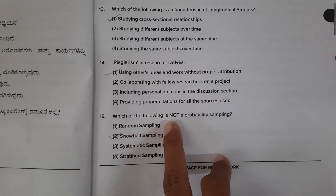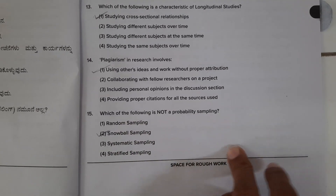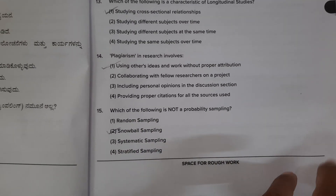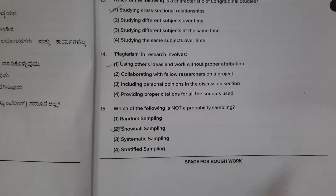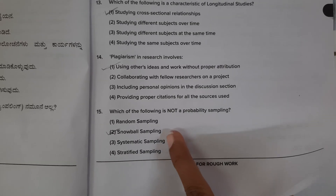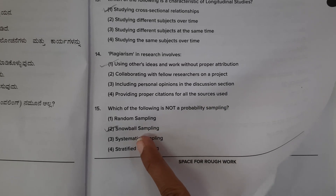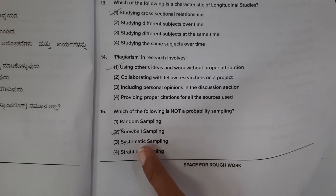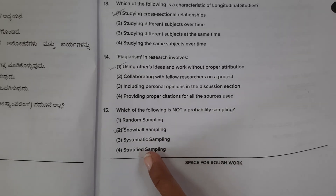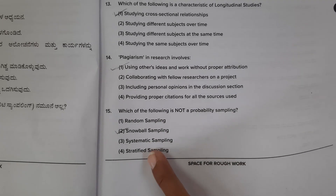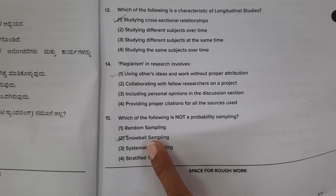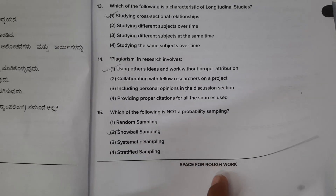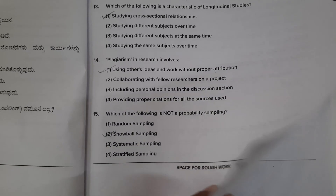Which of the following is not a probability sampling? The options include random sampling, snowball sampling, and stratified sampling. The second option — snowball sampling — is correct as the non-probability sampling method.